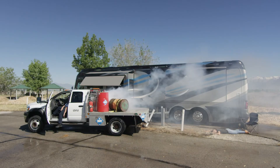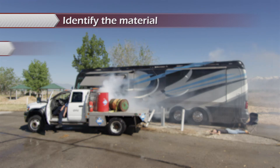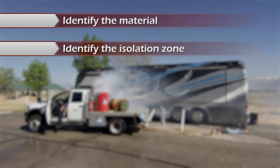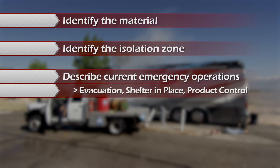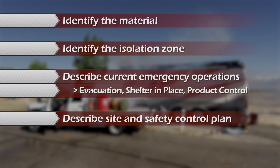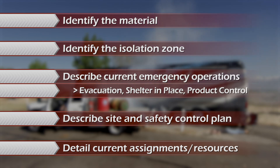Some of these actions may include the following: identify the material; identify the isolation zone; describe current emergency operations such as evacuation, shelter in place, and product control; describe the site and safety control plan; and detail current assignments and location of resources. All crews should report back to command confirming completion of assignment.